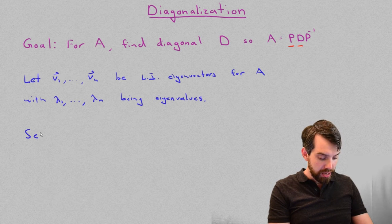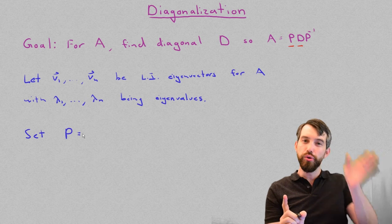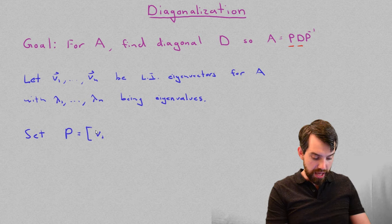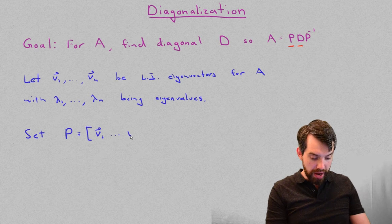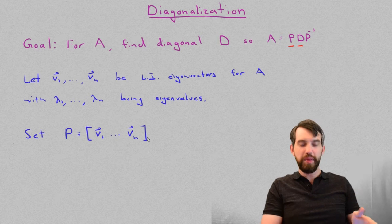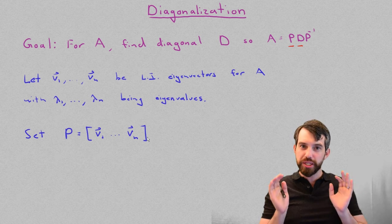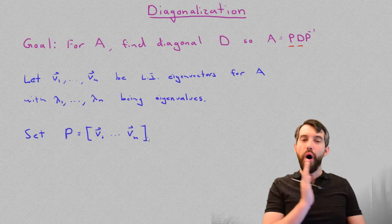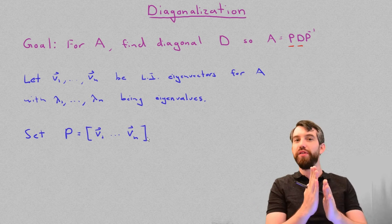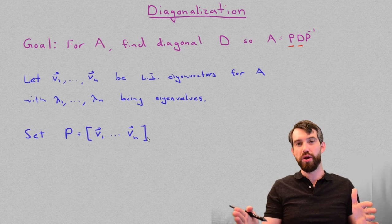I am going to set the matrix P to be the matrix whose columns are these eigenvectors. So it's a matrix and it has columns the v1 all the way down to the vn. And then I'm going to note that this P matrix whose columns are all the eigenvectors, that is going to be invertible precisely when all of those eigenvectors are linearly independent. Indeed, if you have linearly independent columns, you have an invertible matrix. If you don't have an invertible matrix, you have linearly dependent columns.